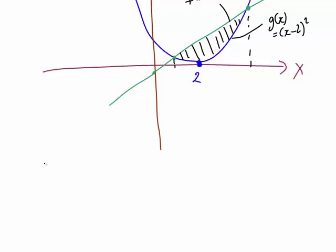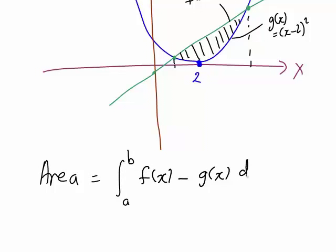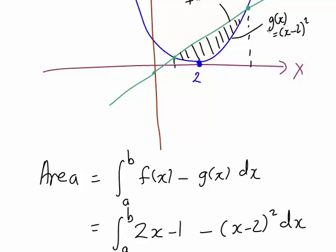And we saw that the formula then was of the form the integral from a to b of f(x) minus g(x) with respect to x. Therefore it's going to be the integral from a to b of 2x minus 1 for the upper curve f(x) in this case minus (x minus 2) squared for the lower curve g(x).